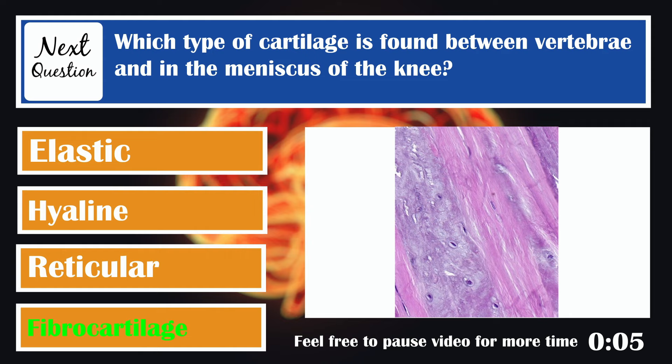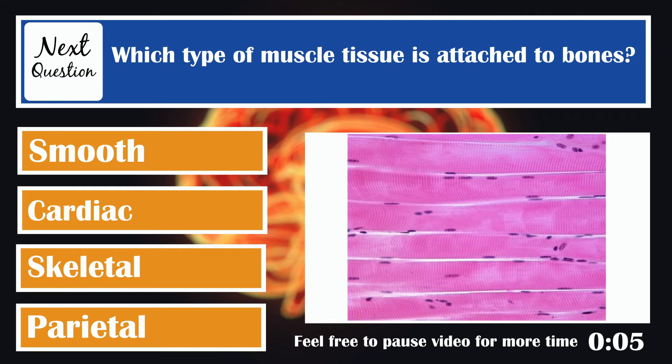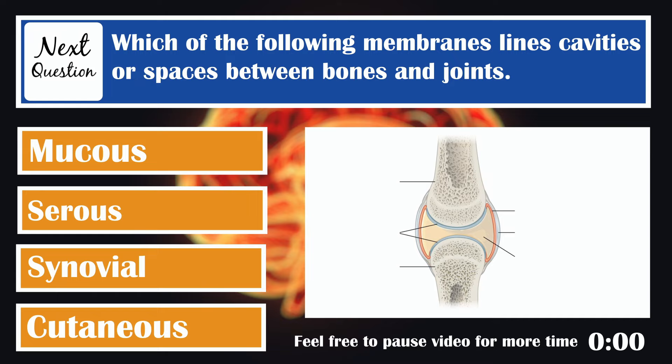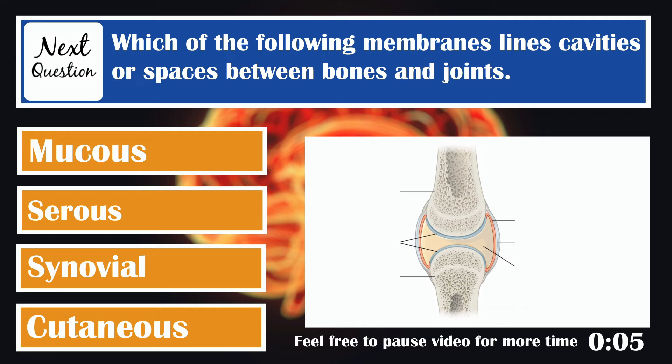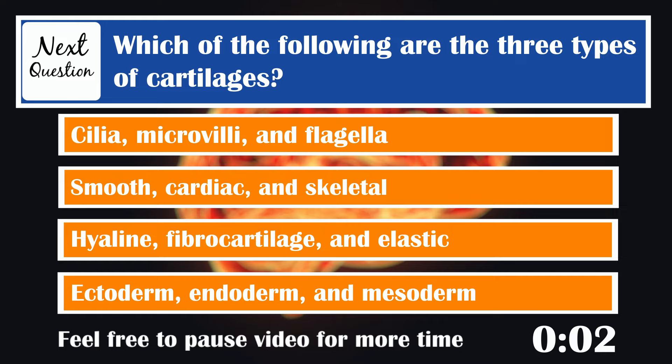Which type of muscle tissue is attached to bones? Skeletal muscle is attached to bones and is the most abundant muscle tissue type. Which of the following membranes lines cavities or spaces between bones and joints? Synovial — mainly freely movable joints such as the shoulder, hip, and knee. These membranes secrete a thick clear fluid called synovial fluid. Which of the following are the three types of cartilage? Hyaline, fibrocartilage, and elastic.